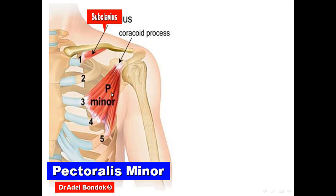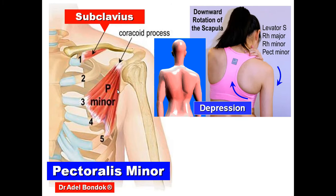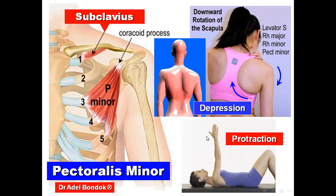Regarding the deep muscles — pectoralis minor and subclavius. The pectoralis minor takes origin from the third, fourth, and fifth ribs. It is inserted into the coracoid process, and is supplied by the medial pectoral nerve. Its action is depression of the scapula and protraction of the scapula — protraction meaning forward movement of the scapula or shoulder.